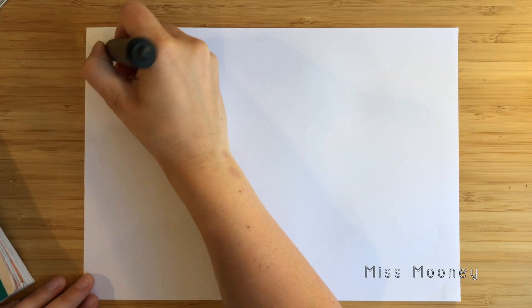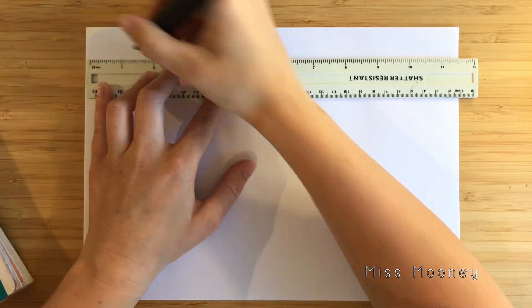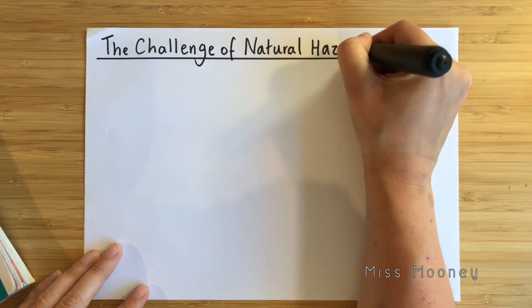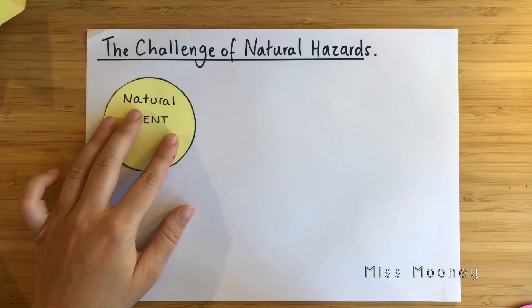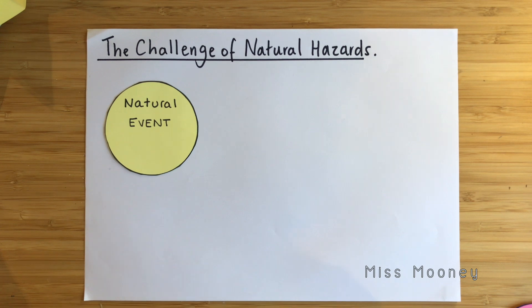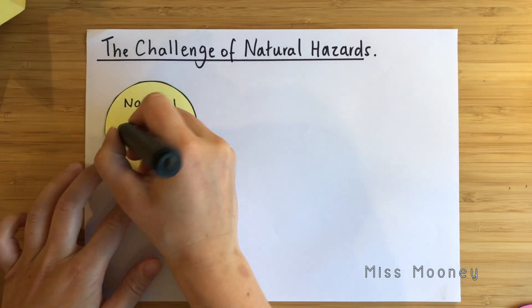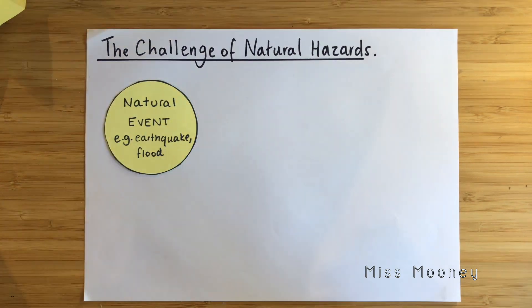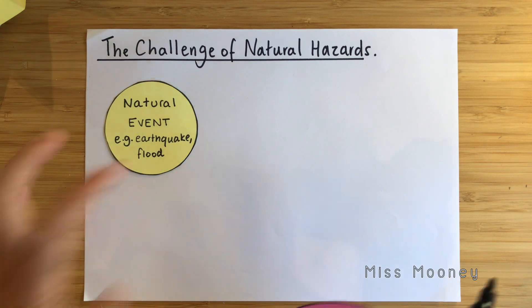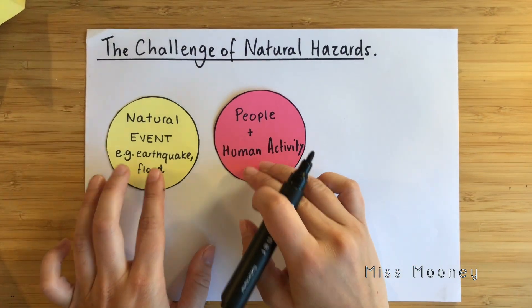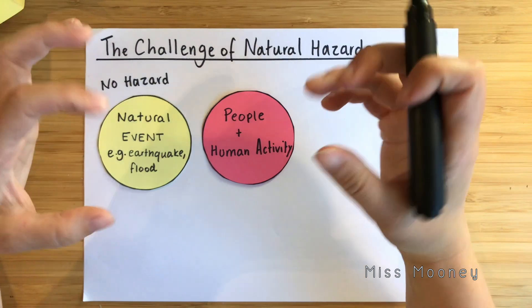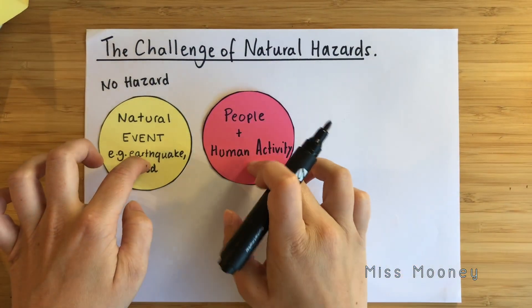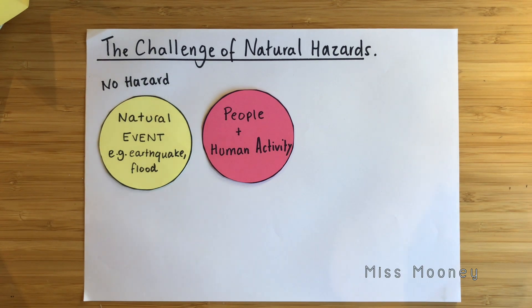The first thing we're going to look at is the challenge of natural hazards. Write yourself a title, and then we'll look at what is a natural hazard. The first thing we have is a natural event — something like a flood, an earthquake, or a volcano. On its own, there is no hazard when natural events and people are not overlapping.